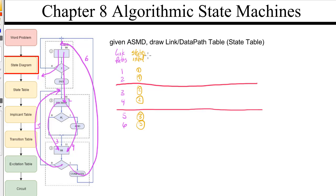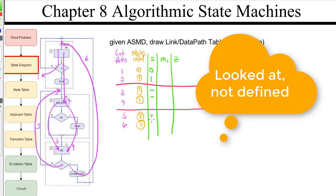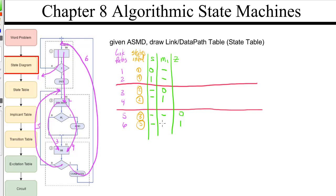And then we have our inputs. Our inputs are S, M1, and Z. We're defining them for all these link paths. So in link path one, S is a zero; in link path two, S is a one. S is not defined anywhere else, but we've got to be really careful here. M1 is defined as zero and M1 is a one. And Z is defined here. So you've got to be really careful that these only activate in their states.